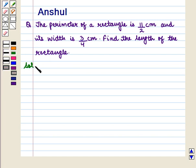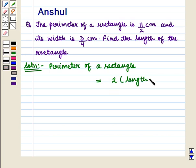Let us start with the solution of the given question. We know that perimeter of a rectangle is equal to 2 times (length plus width), and we are given that perimeter of a rectangle is 11/2 cm and its width is 3/4 cm.